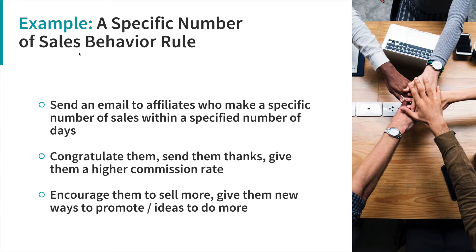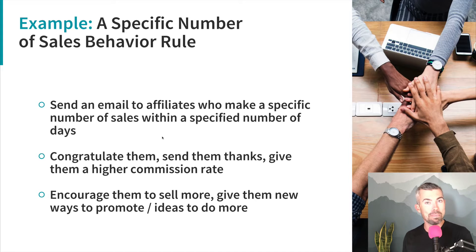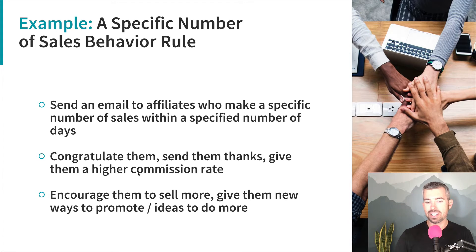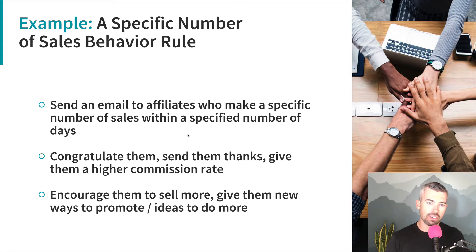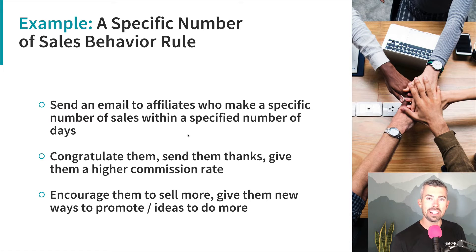One great example with affiliate rules is specifying a number of sales within a certain time period and then sending an email to those affiliates — congratulate them, send thanks, maybe give them a bonus or a higher commission rate if they're doing really well. If they're pushing a lot of traffic in a small period of time, you can entice them to keep doing that for a longer period of time. It's an example of how you can get really creative with behavioral and automated rules inside Thrivecart — and it's one of the least talked about parts of the platform that can save you a ton of time and make you a lot of money.